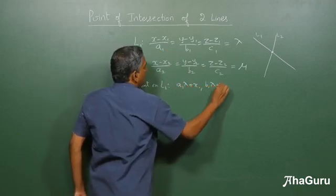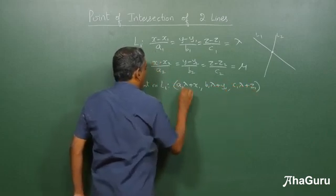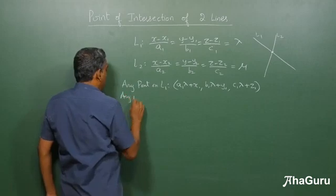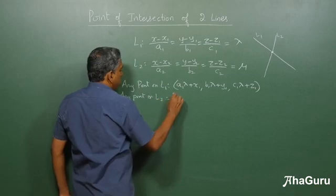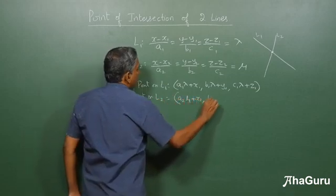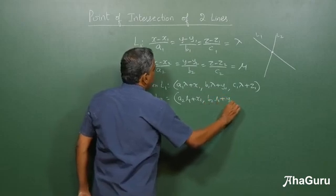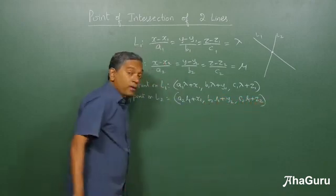b1 lambda plus y1 and c1 lambda plus z1. Any point on L2 is given by a2 mu plus x2, b2 mu plus y2 and c2 mu plus z2.